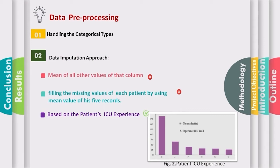For data pre-processing, we first handle categorical types by finding columns that are not numeric and performing one-hot encoding to put dummy numeric values. Then we perform data imputation. Not all clinical exams and vital tests were performed completely for all patients, so we find a huge number of missing values ranging from 500 to 1,140 missing values per column. The dataset suffers from sparsity, which presents a challenge as it makes data analysis problematic. We tested three different methods to deal with this problem on a hypothetical model.